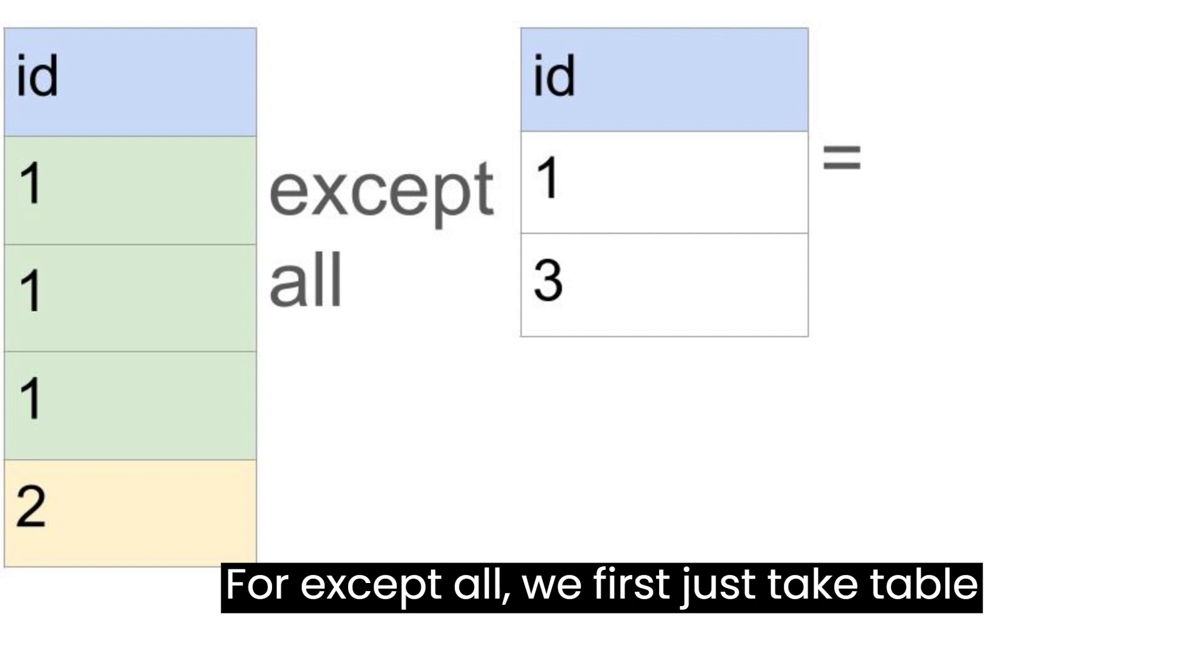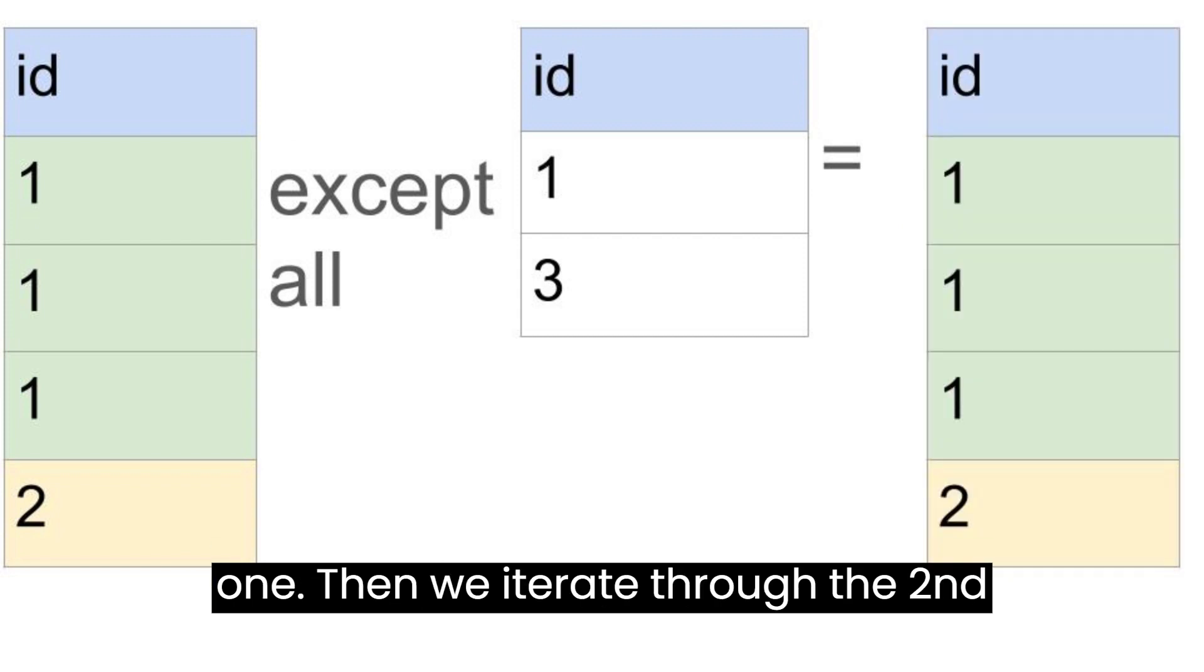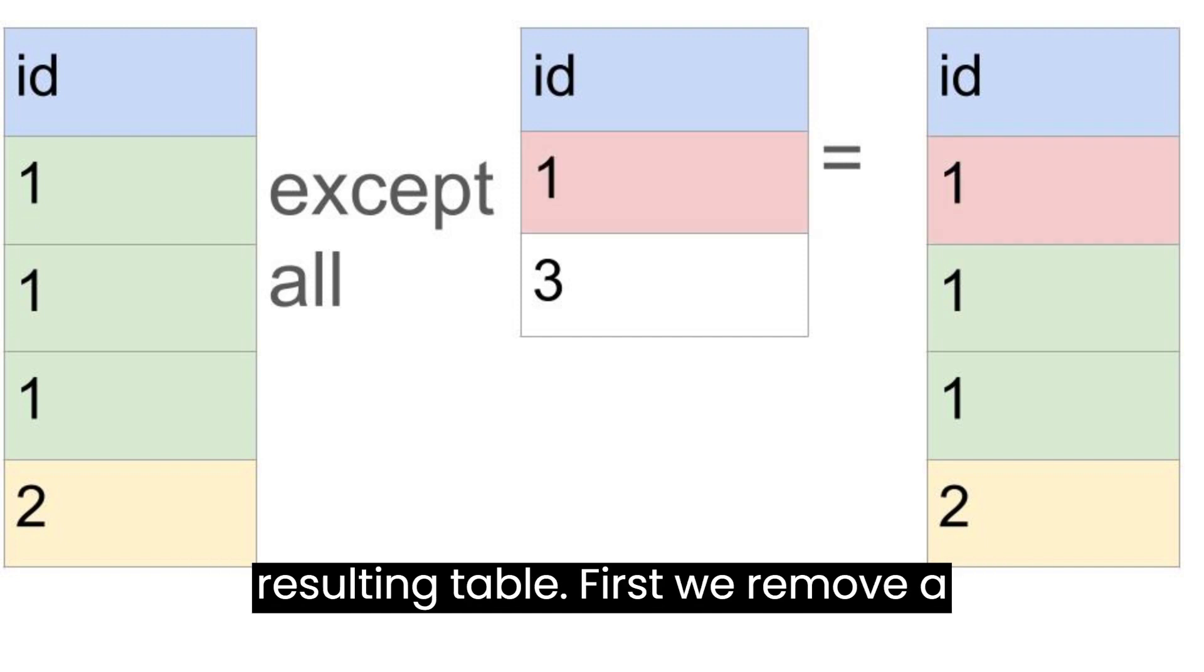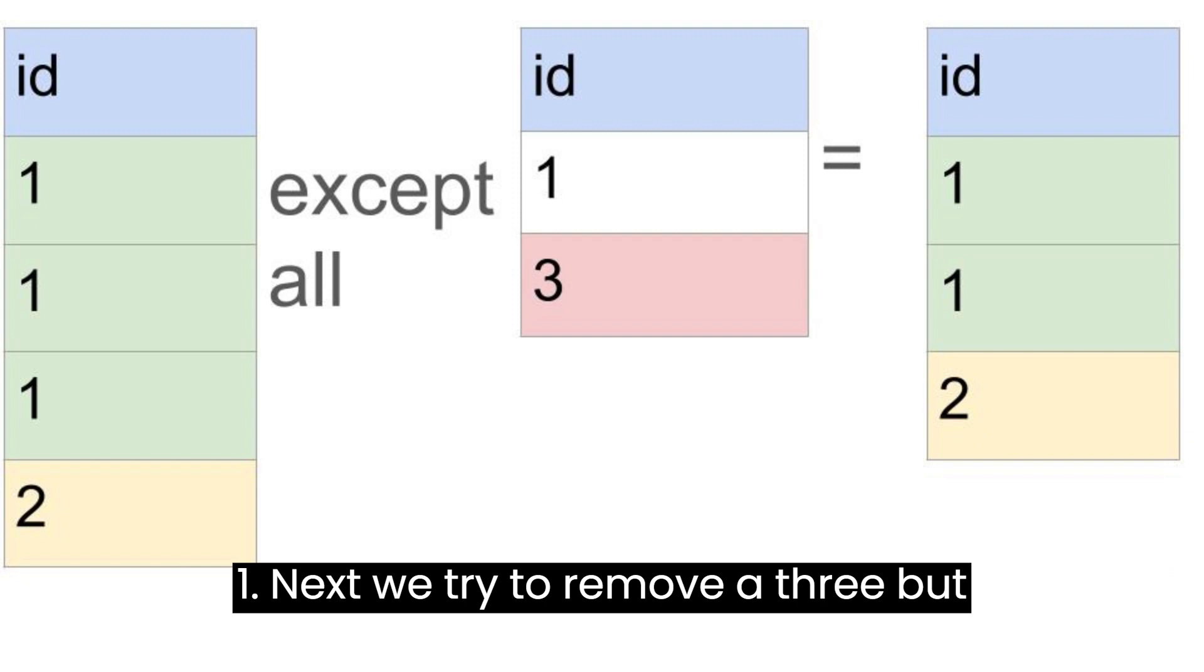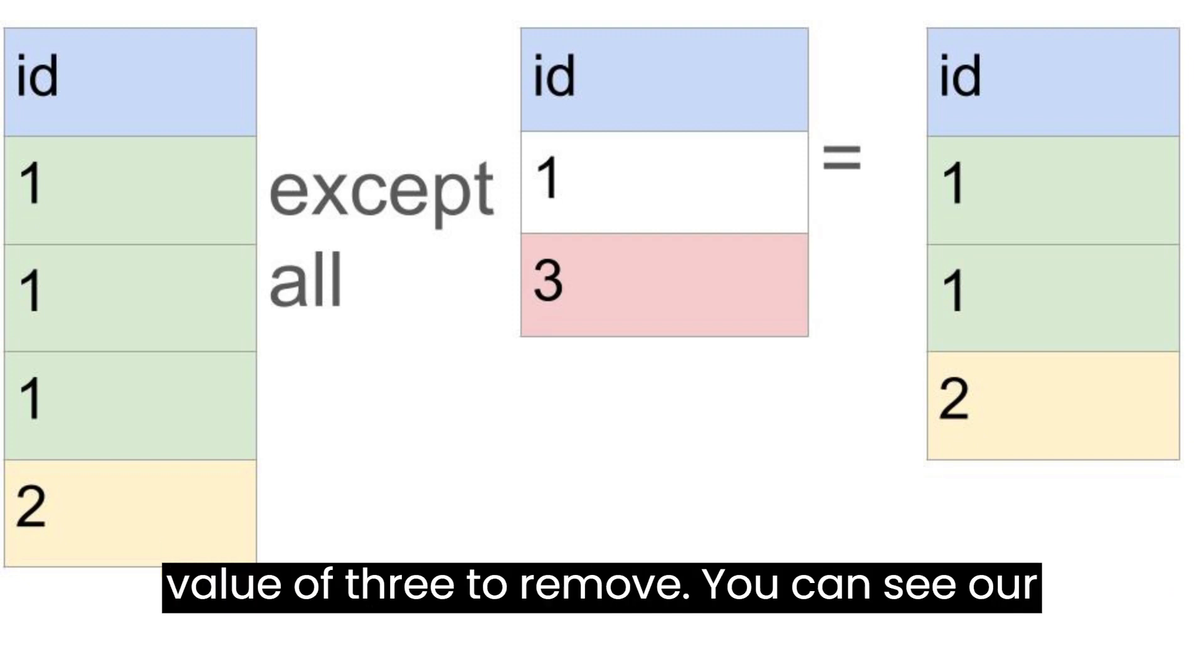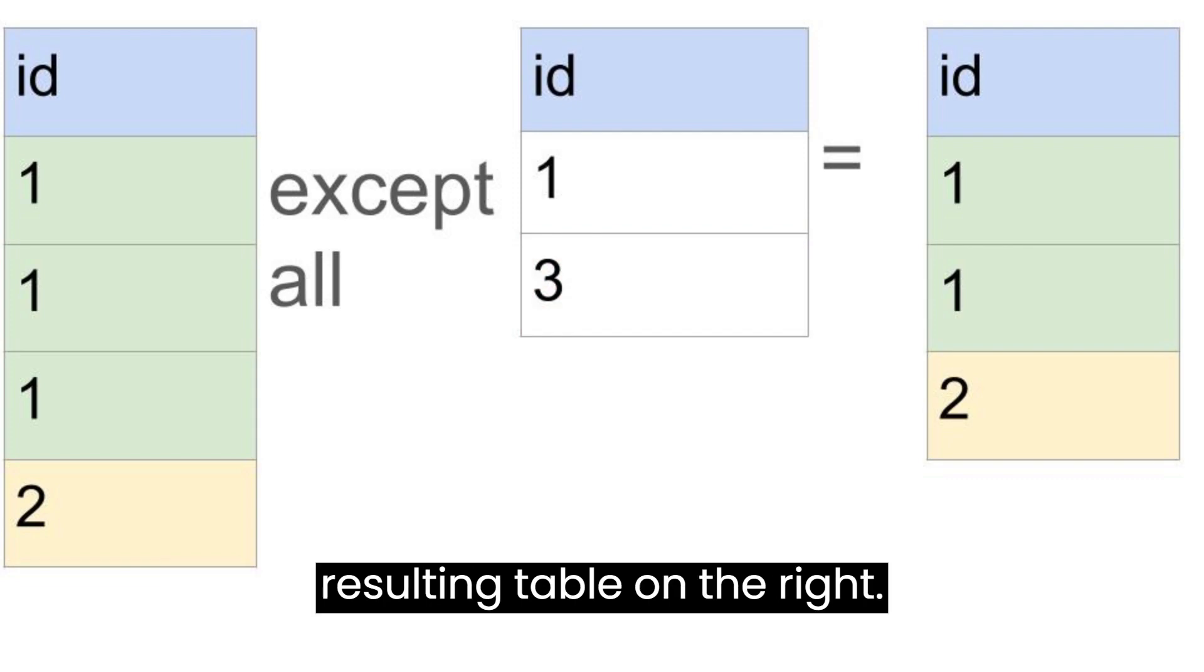For EXCEPT ALL, we first just take table 1. Then we iterate through the second table and remove those values from our resulting table. First we remove a 1. Next we try to remove a 3, but just don't do anything since there is no value of 3 to remove. You can see our resulting table on the right.